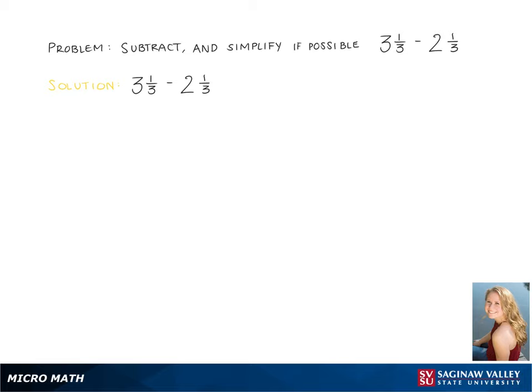Here we are going to solve 3 and 1 thirds minus 2 and 1 thirds and simplify if possible. The first step is to rewrite the problem and change the mixed numbers into improper fractions.